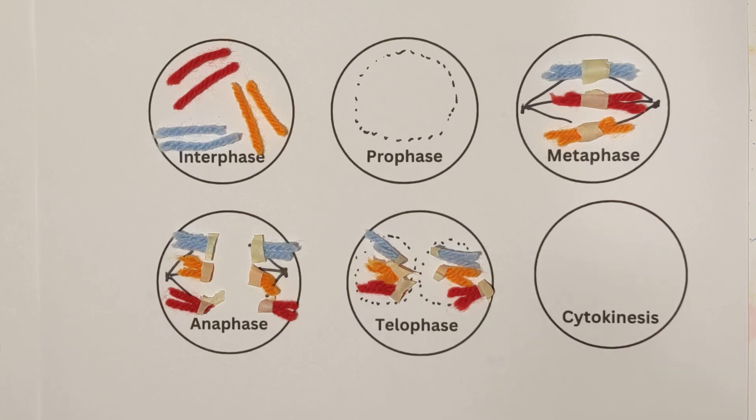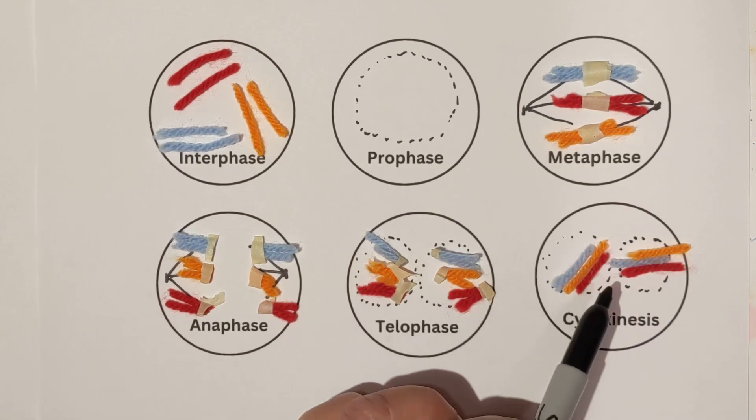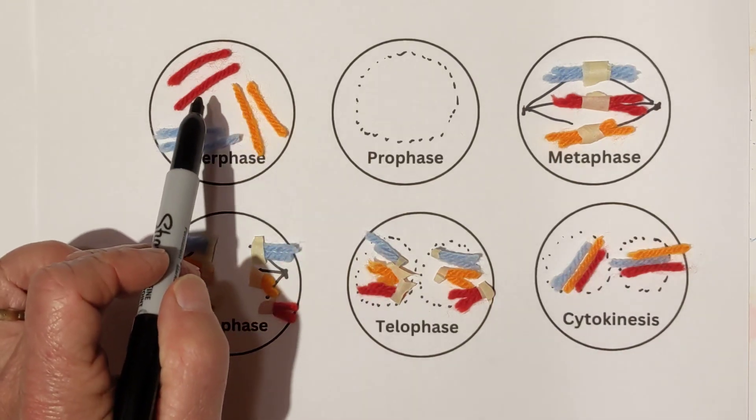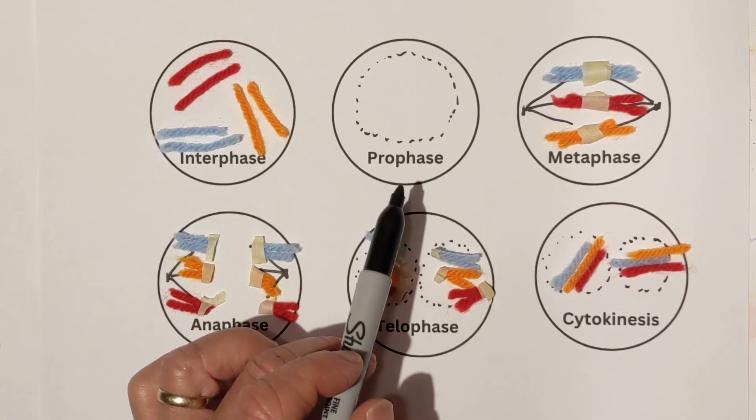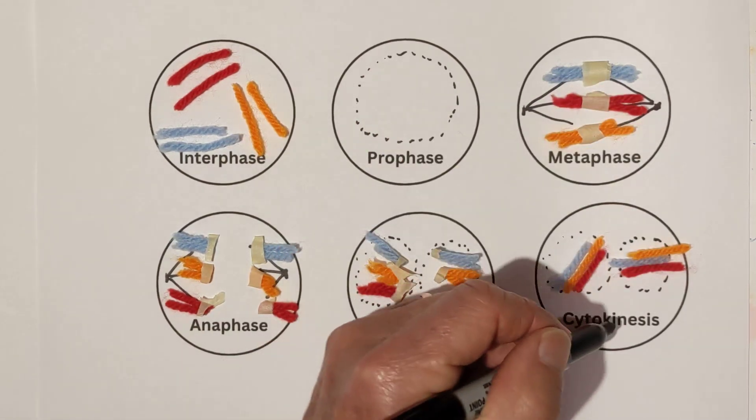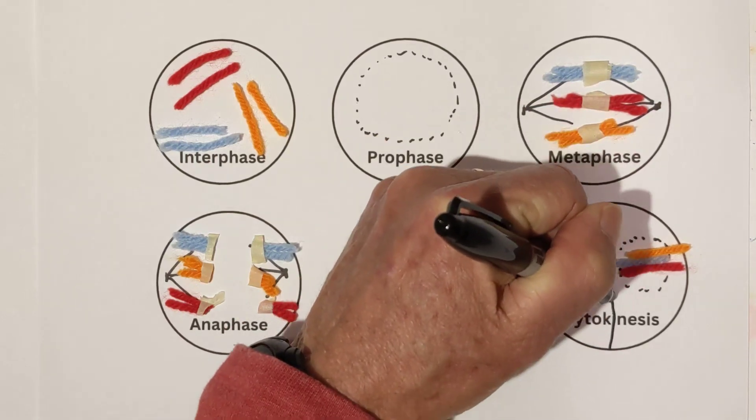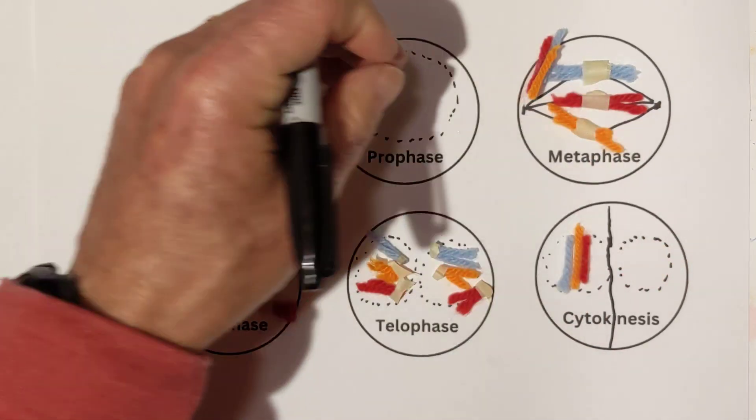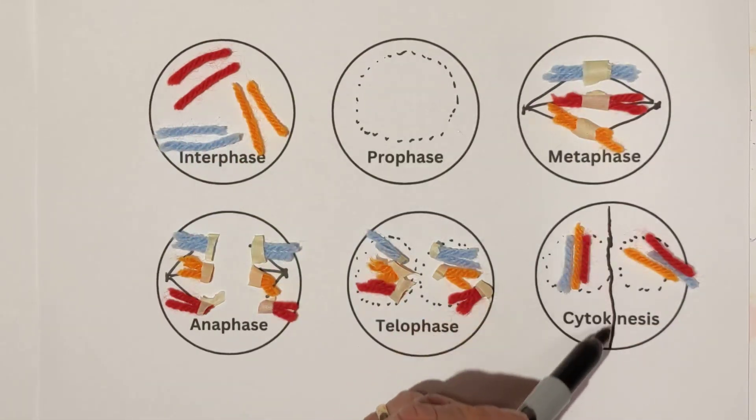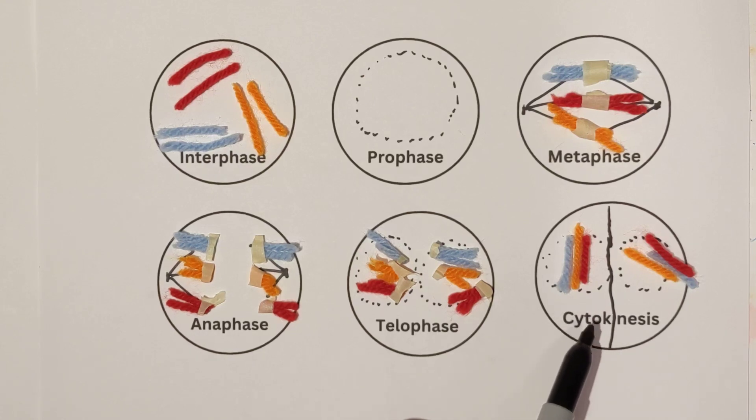So now we move on to cytokinesis. Now, during cytokinesis, the chromosomes unwind completely, and you're back to kind of where we started in interphase. And then, also, you have a cell plate begins to form. A cell plate begins to form. And in the end of cytokinesis, you have two daughter cells.